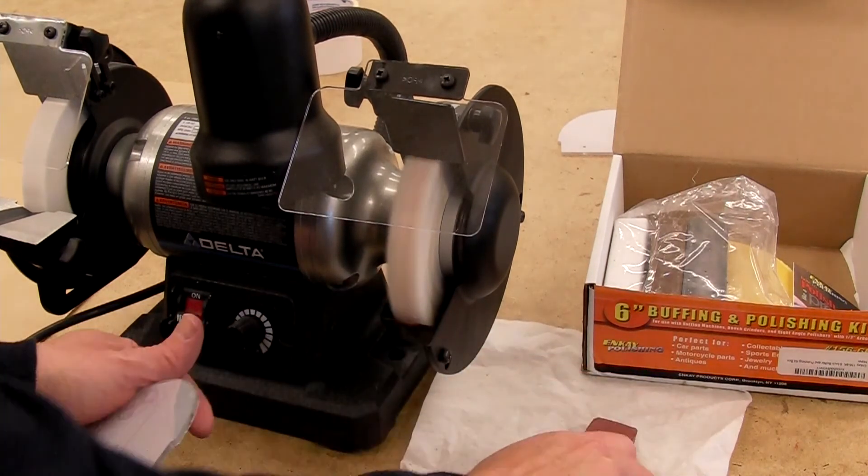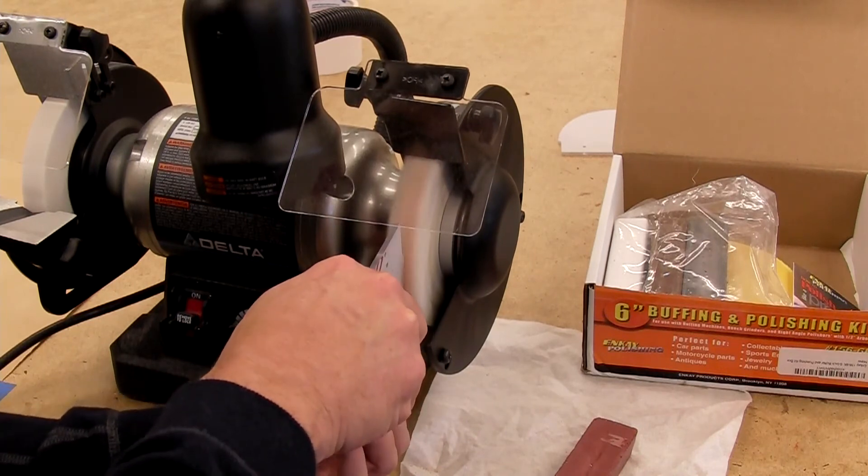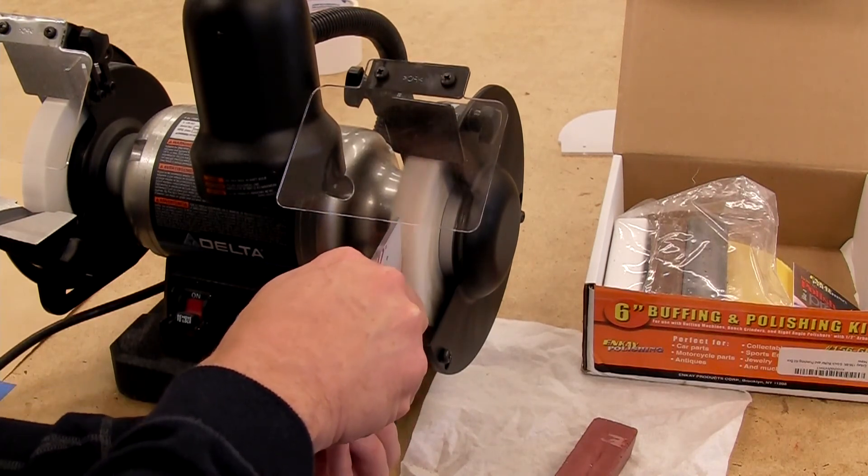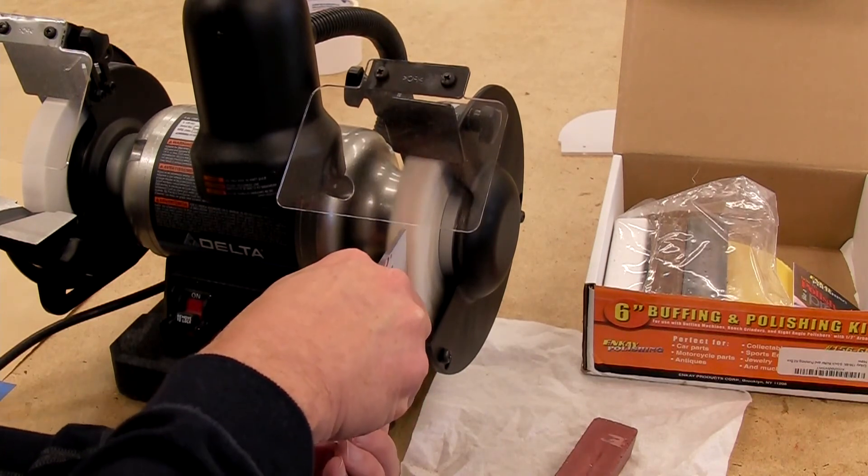And if you really want to you can even keep going. Beyond sandpaper you start using a buffing wheel and jeweler's rouge. We'll do one pass here even though it's pretty hard to argue that we need this, just to get that super fine smooth edge.